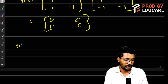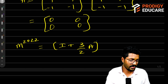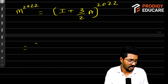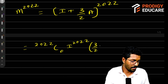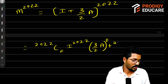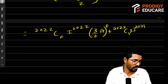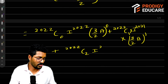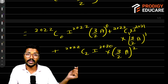So M to the power 2022 is asked. I can write it as (I + (3/2)A) to the power 2022. Using simple binomial expansion: 2022C0 times I to the power 2022 times (3/2 times A) to the zero, plus 2022C1 times I to the power 2021 times (3/2)A to the one, plus 2022C2 times I to the power 2020 times ((3/2)A) squared. Since A squared is zero, all terms from A squared onward can be ignored.